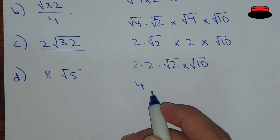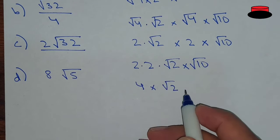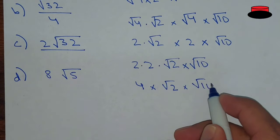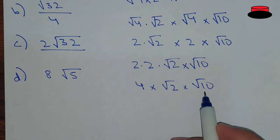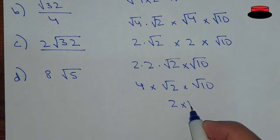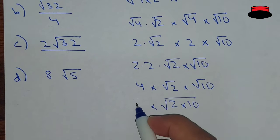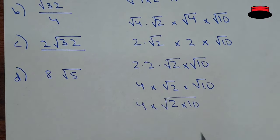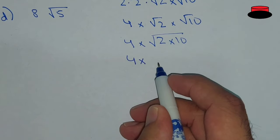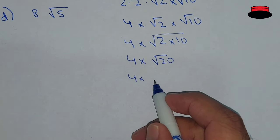So, 2 multiply by 2 that is 4, multiply by under root 2 multiply by under root 10. Now, under root 2 multiply by under root 10 gives under root 20. So this becomes 4 multiply by under root 20.